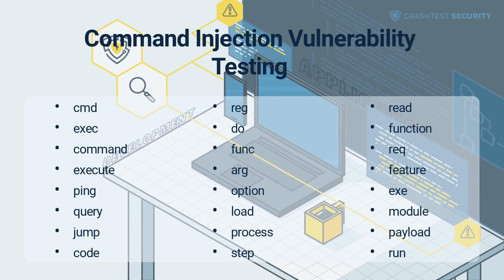You can use some standard parameters to test for operating system command injections. If you prefer automated pen testing rather than a manual effort to test for dangerous software weaknesses, you can use a dynamic application security testing tool to check your applications.